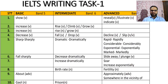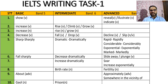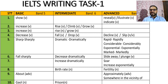Now let's look at vocabulary words for Band 5, 6, and 7+. First, the word 'show' — for intermediate (Band 6) use, and for advanced (Band 7+), you can use 'reveals,' 'illustrate,' and 'indicate.' For 'increase,' intermediate alternatives are 'rise,' 'climb,' and 'grow.' An advanced word you can also use is 'accelerate.' For 'decrease,' Band 7 words include 'drop,' 'decline,' and 'slump'; you can also use 'dwindle.'